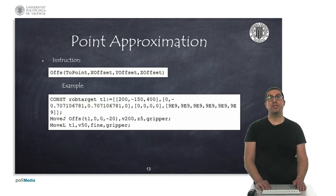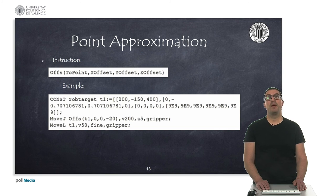When following a trajectory, it is usually convenient to carry out an approximation to a given point. This can be done with the Offs instruction, which allows you to set a point offset relative to the point's own coordinate frame. For example, we can define a non-linear approaching movement 20 mm above the point of interest T1.